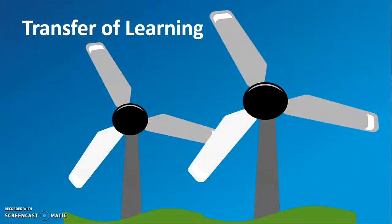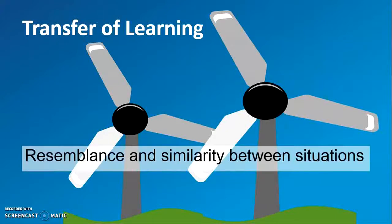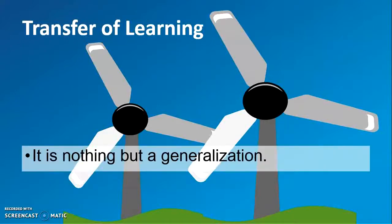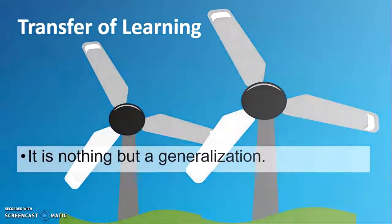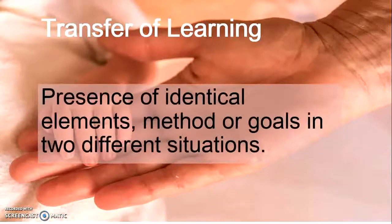Transfer of learning depends upon many factors. One such factor is the resemblance and similarity between the earlier learning situation and the new learning situation — more resemblance and similarity means more learning. Some people call it generalization of skills which one acquires in one situation and applies in another. Others believe that the presence of identical elements, methods, or goals in two or more different situations facilitates transfer of learning — more identical elements means more transfer.